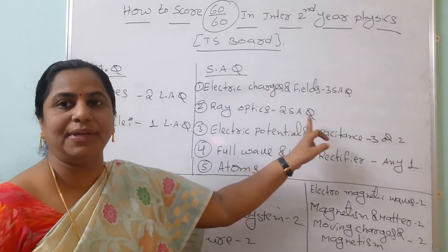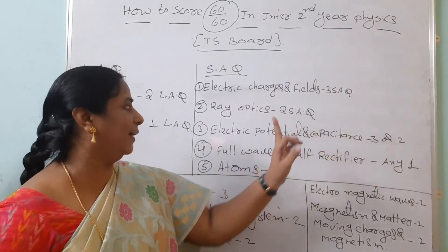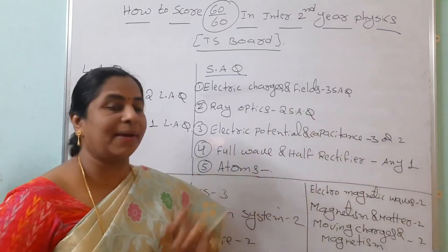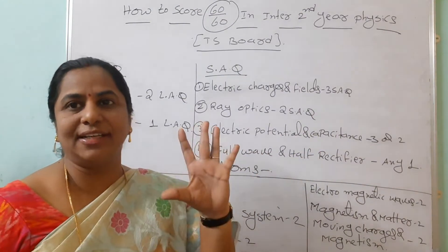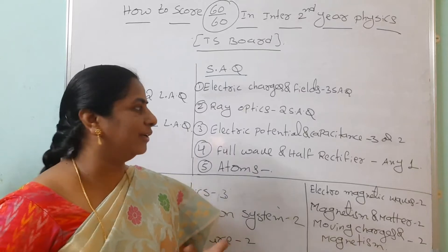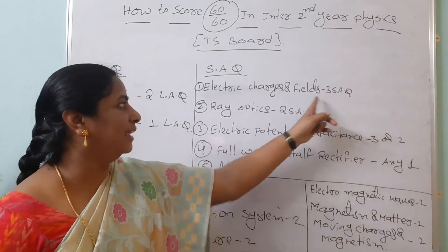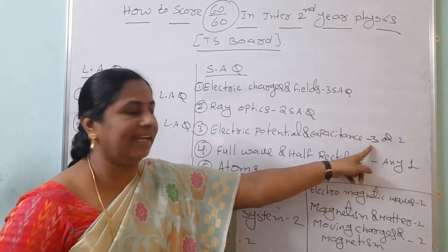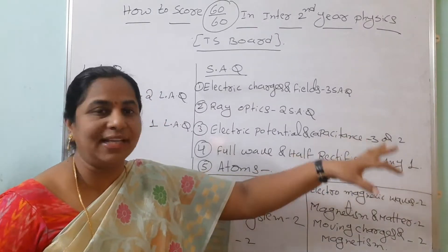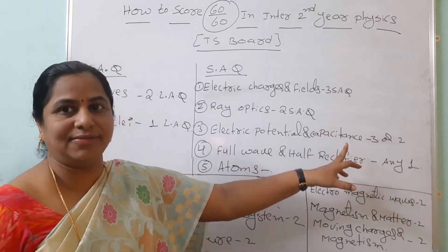Ray optics: two SAQs. Three plus two equals five. Electric potential and capacitance also - five are there, but in the modal paper they've given three according to weightage. So three plus two five, five plus three eight. You'll be safe side. Even if they are giving two, you're safe side.